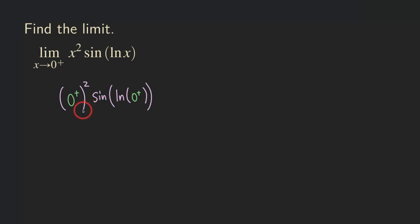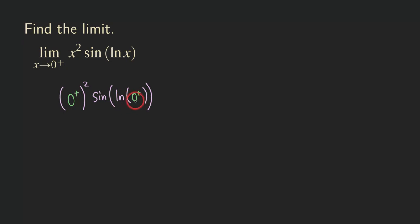By just looking at this form, it may suggest that the limit is equal to zero, because there's a zero being squared giving a small number, times some stuff. But the problem comes from ln of something close to zero, approaching from the right — that quantity is actually approaching negative infinity.